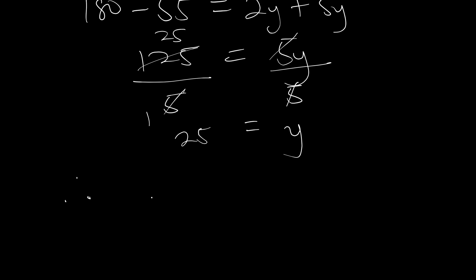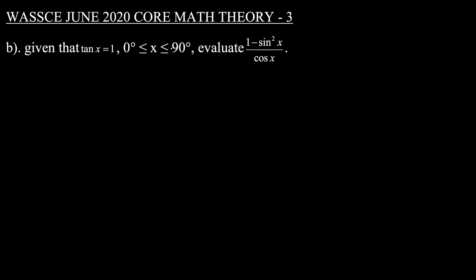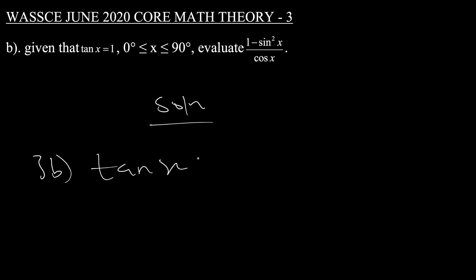Therefore y is equal to 25 degrees. This brings us to the end of question 3a. Don't forget to like and subscribe for more, and if you have questions leave them in the comment section. Moving on to question 3b: given that tan x equals 1 and x is between 0 and 90 degrees, evaluate 1 minus sine squared x all over cos x.